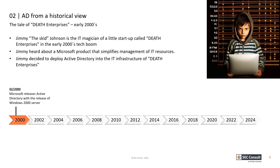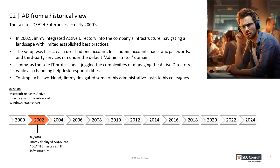In the early 2000s tech boom, Jimmy the Skid Johnson stood out as the IT wizard behind an emerging startup called Dev Enterprises. Always looking for innovative solutions, Jimmy came across a Microsoft product designed to streamline management of IT resources. Recognizing its potential, he integrated Active Directory into Dev Enterprises' infrastructure. In 2002, Jimmy started that integration, navigating a landscape with limited established best practices.